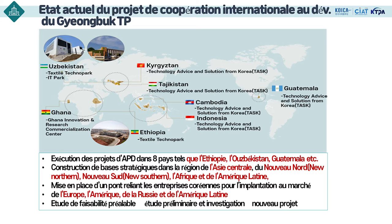Lors de la mise en œuvre d'un tel projet, il doit y avoir une consultation préalable avec le pays bénéficiaire et entre nos organismes nationaux. On effectue d'abord une étude de faisabilité. Ainsi, après avoir effectué une enquête préliminaire et détaillée, et après que le gouvernement coréen a examiné et délibéré sur le projet, celui-ci est désigné en tant que nouveau projet en recevant le budget exécuté par l'État.